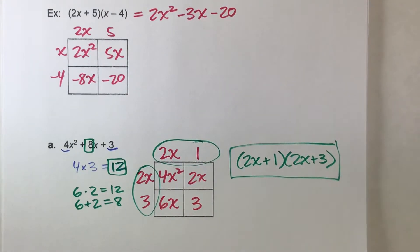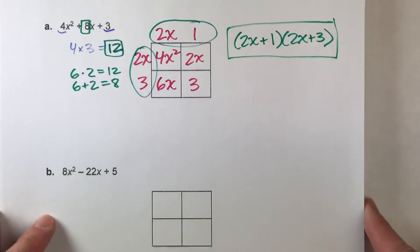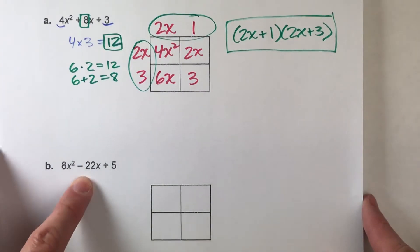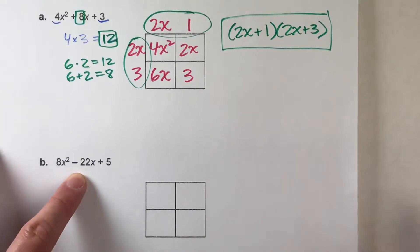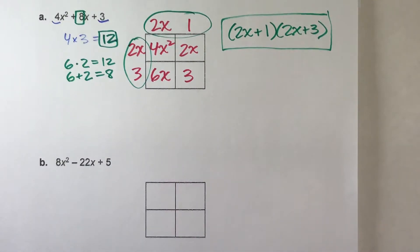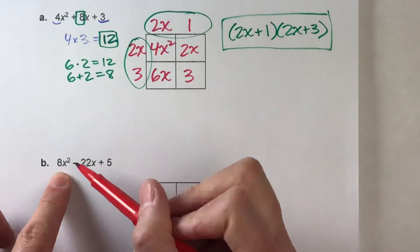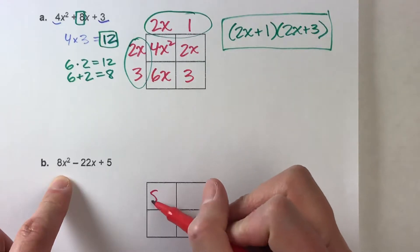I'll do another one. This one's a little bit harder. We've got a negative in there. But we're going to follow the same process. So let's go through it. First off, we take our x squared term. We put it right there.